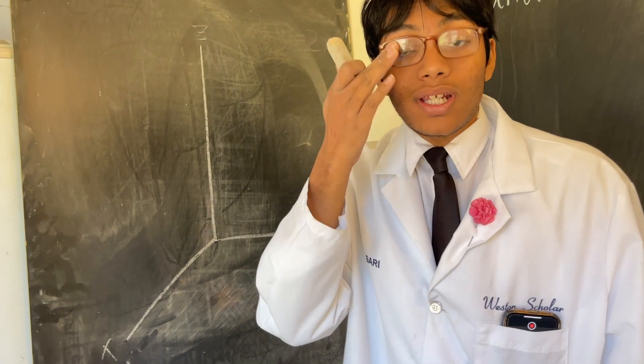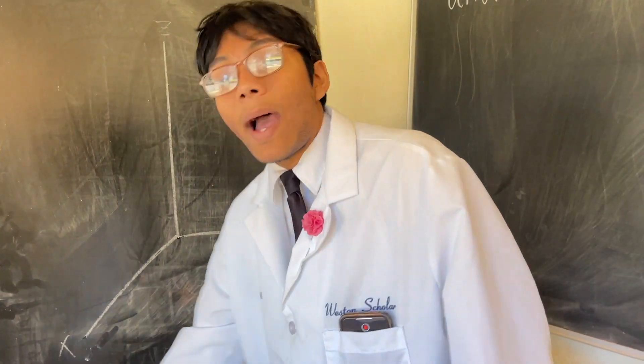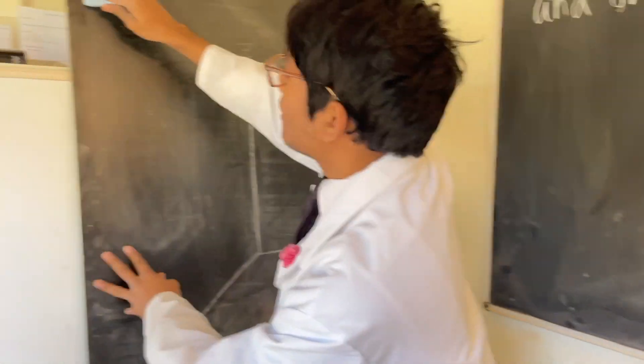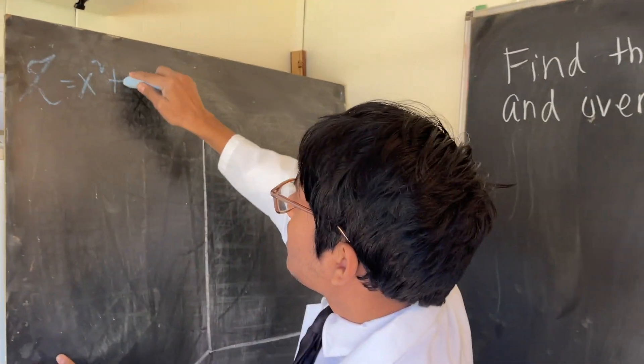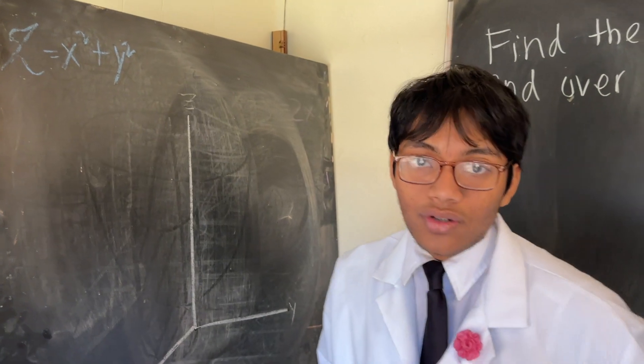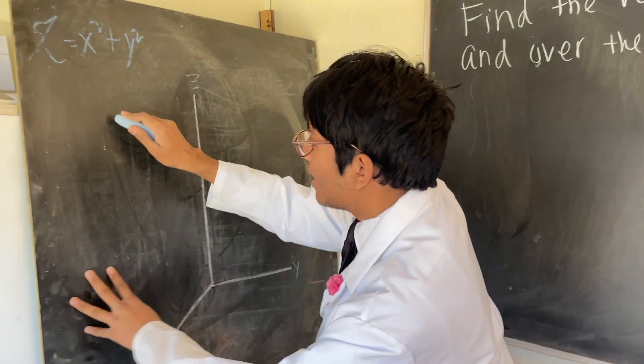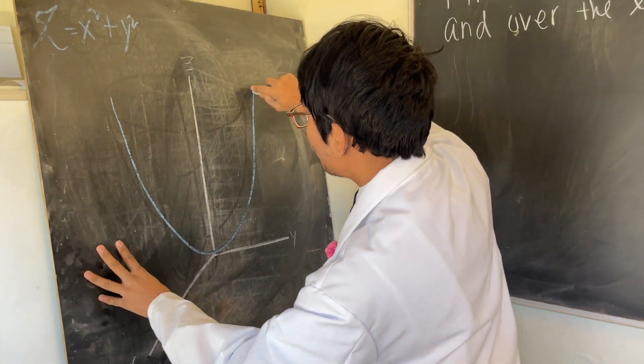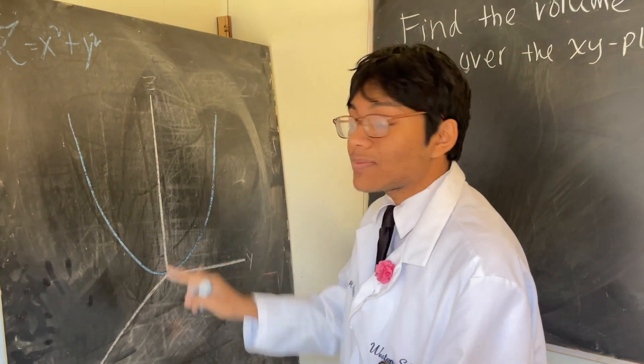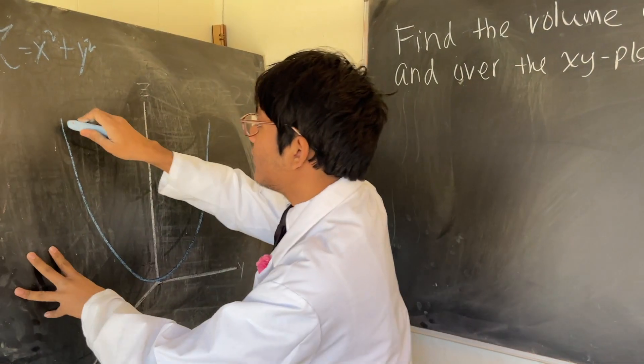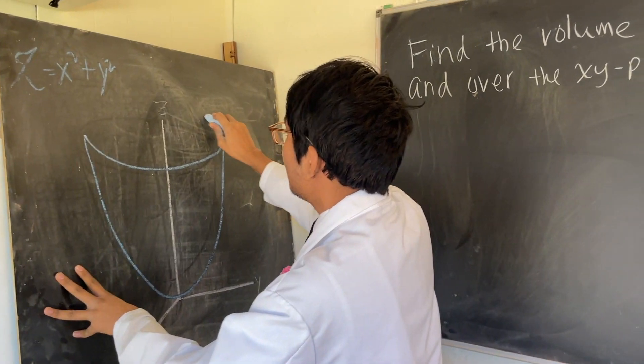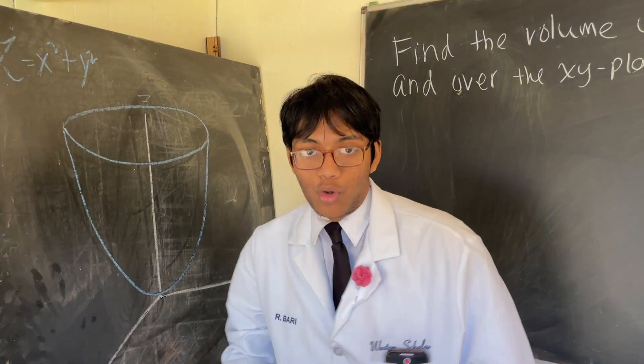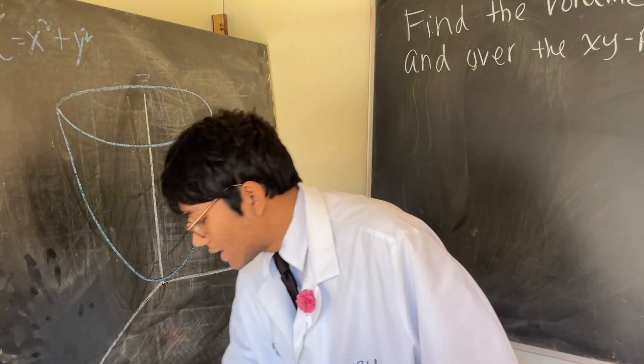What are we trying to visualize? We're trying to visualize a paraboloid, z equals x squared plus y squared. So what does that look like? That looks just like a parabola. Here's your parabola. But now, take this parabola, revolve it around the z-axis, and what do you get? You're going to get a paraboloid. This is what a paraboloid looks like.